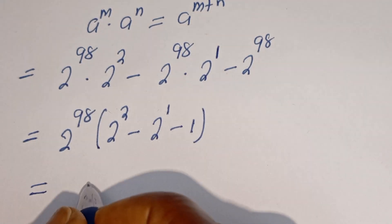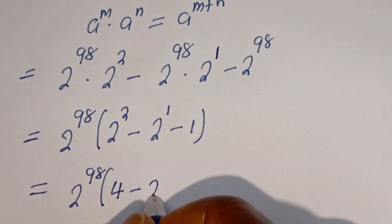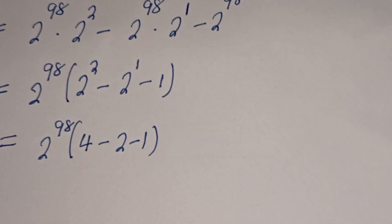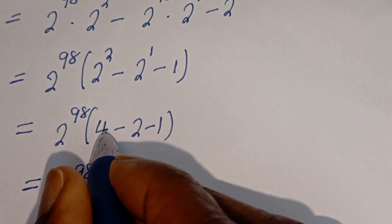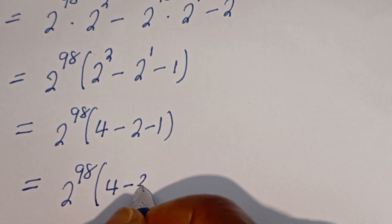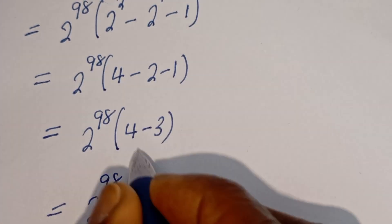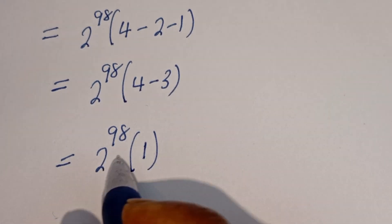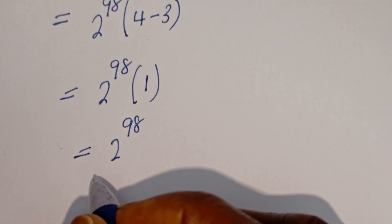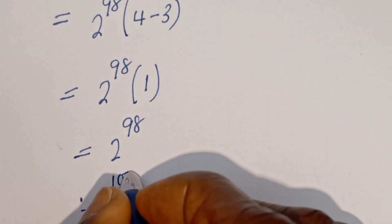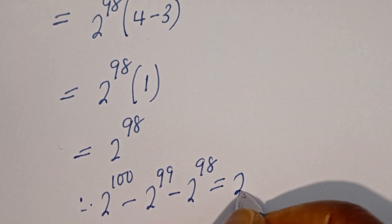This is equal to 2 to the power of 98 bracket, 2 squared is 4, minus 2 to the power of 1 is 2, minus 1. That gives 4 minus 3, which is 1. Then 2 to the power of 98 multiplied by 1 is 2 to the power of 98. Therefore, 2 to the power of 100 minus 2 to the power of 99 minus 2 to the power of 98 is equal to 2 to the power of 98.